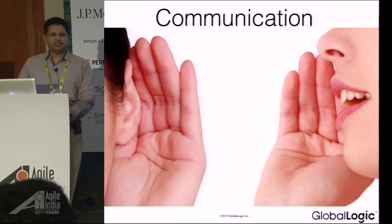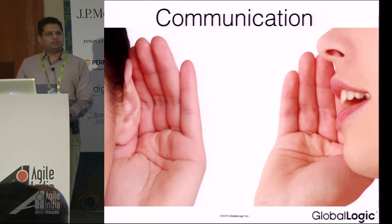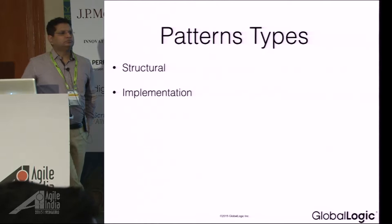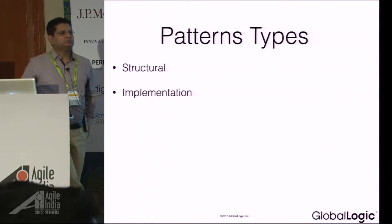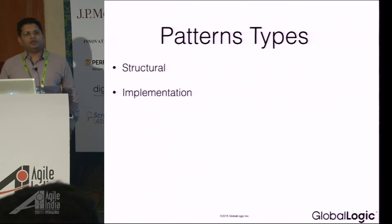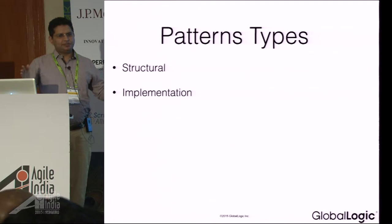I cannot stress enough about communication. Communication is one of the biggest factors why distributed Agile projects may fail. Because of communication problems and the lack of human touch, you start losing trust in other people, and that starts creating problems. Because we are distributed, there is no one way of doing communication. There are many ways to make sure that the bridge between two humans is established somehow.